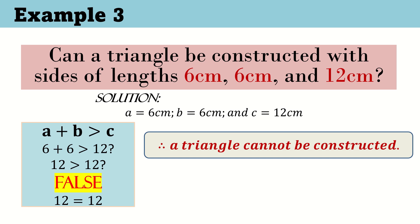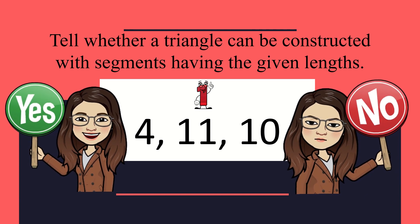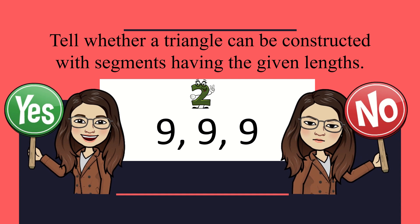Now that you know the important ideas and concepts about the triangle inequality theorem, let us see what you have learned by answering this short activity. You may type your answers in the comment section. Take a screenshot of your answer and send it to your math teacher. For numbers 1 to 3, tell whether a triangle can be constructed with segments having these given lengths — write yes if a triangle can be constructed, or no if not. Number 1: side lengths 4, 11, and 10. Can we construct a triangle? Number 2: side lengths 9, 9, and 9. Is it possible to construct a triangle with these given lengths?